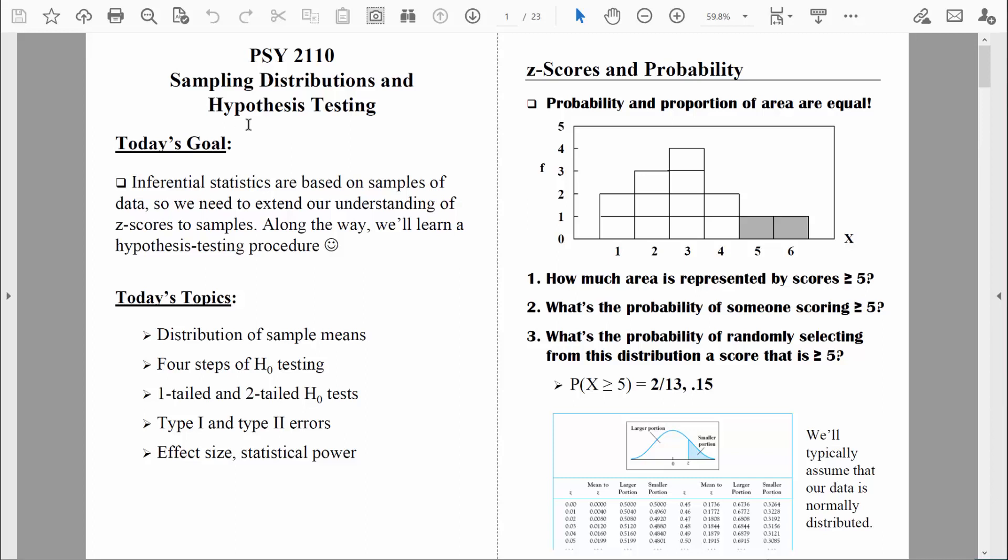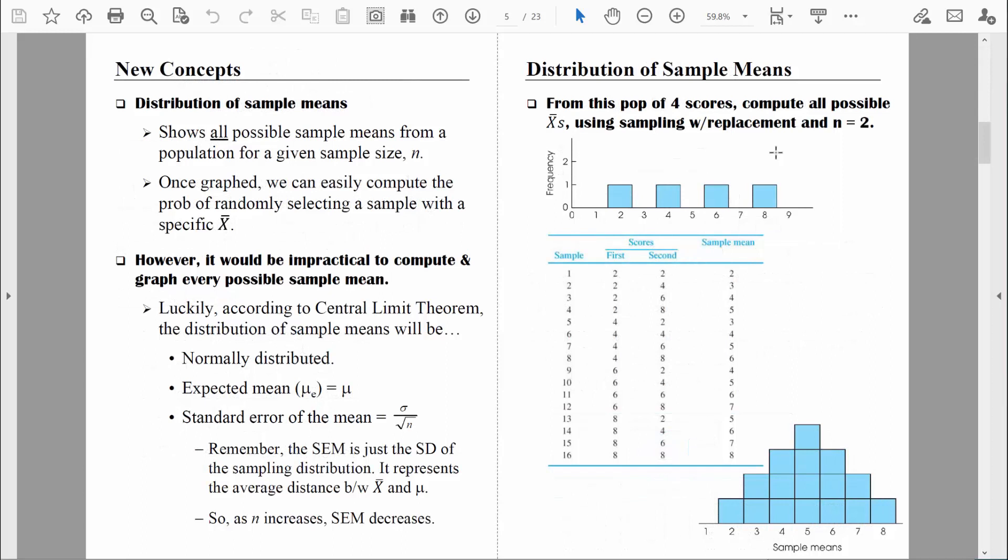Welcome back, everybody. Let's keep talking about sampling distributions, and specifically the distribution of sample means. In our last video, we learned that from a parent population of individual scores, we were able to create a distribution of all possible sample means. Let's go through one more example.